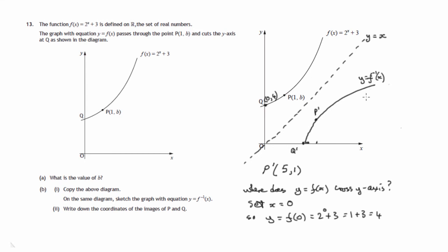And since f to the minus 1 of x undoes what f does, 0 goes in on f graph, 4 comes out. On the f to the minus 1 graph, 4 goes in, 0 comes out. So q dashed will be (4, 0).